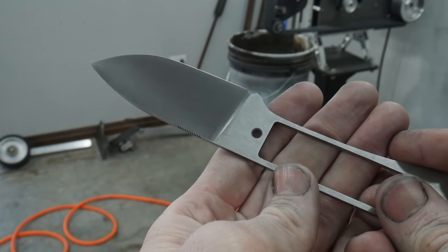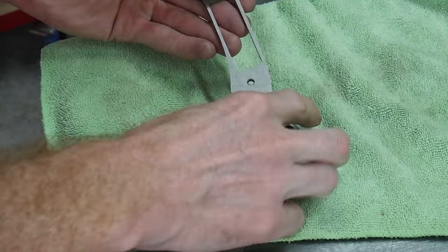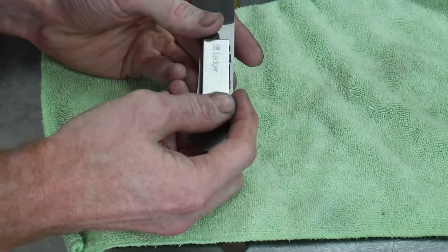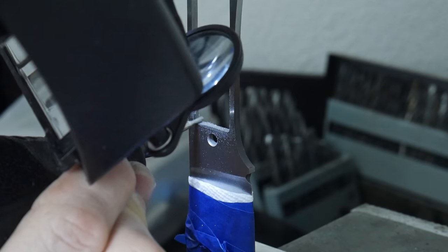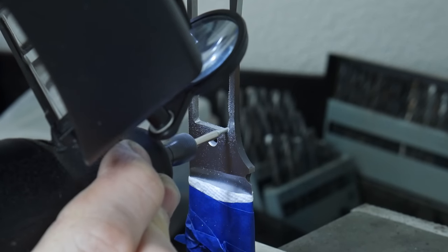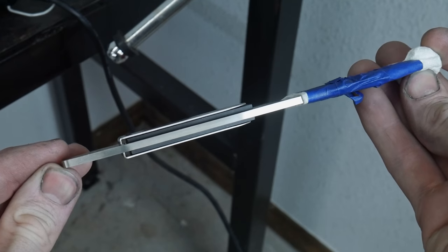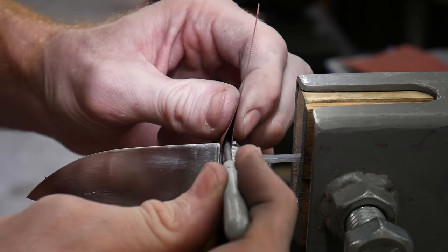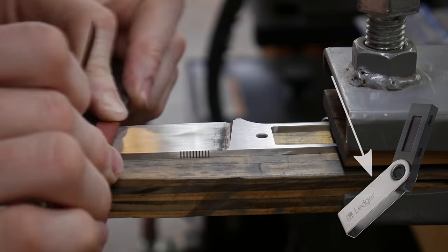As I mentioned earlier, we need to enlarge the corner radius of our milled window in order for our Ledger hardware wallet to fit. To accomplish this task, I used a diamond impregnated burr on my die grinder. You can see here that I have a nice and snug fit with the hardware wallet in the tang of the knife. It's worth mentioning that if you want to maximize the amount of steel around the hardware wallet, you can remove the silver hinge shroud on the wallet and mill a smaller pocket.